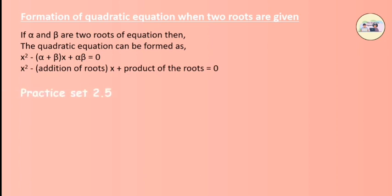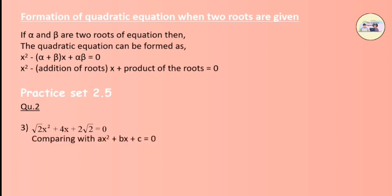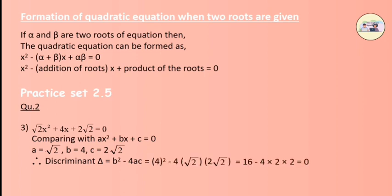Practice Set 2.5, Question 2: Find the value of discriminant. We have the equation root 2 x squared plus 4x plus 2 root 2 equals 0. Comparing with ax squared plus bx plus c equals 0, we get a as root 2, b as 4, and c as 2 root 2. Discriminant d equals b squared minus 4ac. After solving, we get the answer as 0.